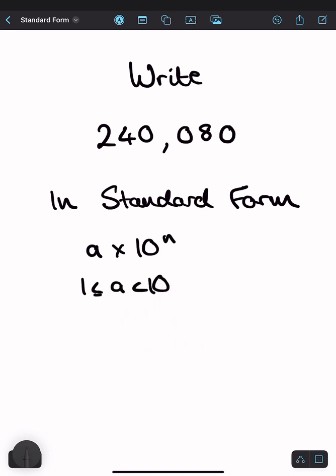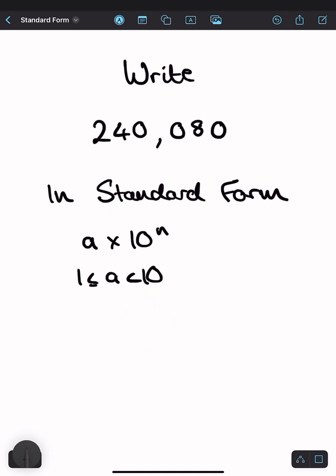So what you have to do is find the first significant value in your number. Here it's 2, so you'd write 2 point, and then afterwards just copy the rest of the values in the number, 4, 0, 0, 8, and I don't have to write the last zero, since I'm after the decimal point here, it has no significance.